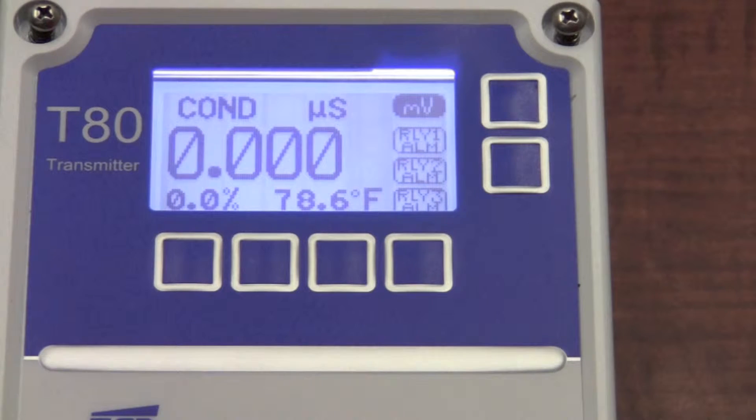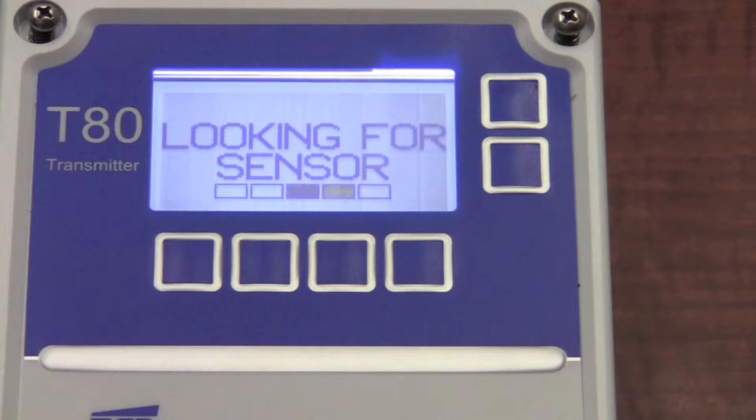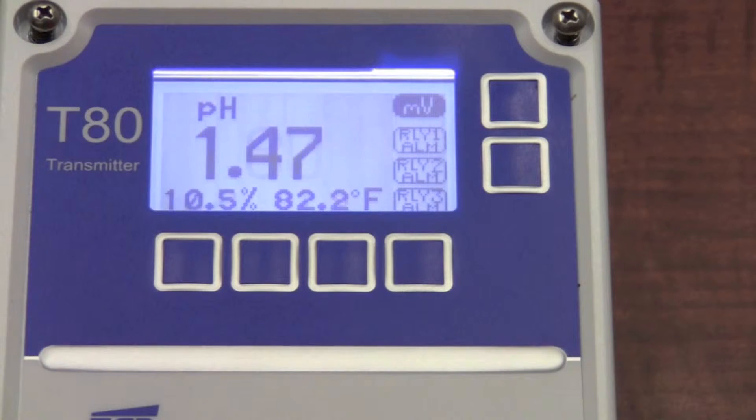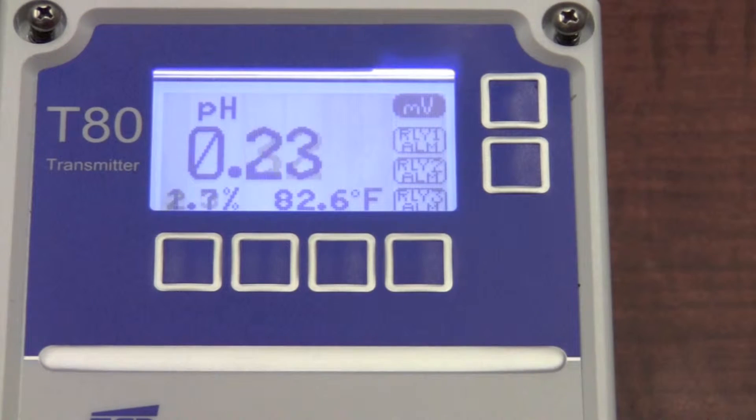I'm going to go ahead and disconnect the conductivity transmitter and reconnect a pH. It interrogates the sensor and finds that it is a pH probe.